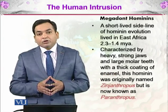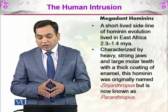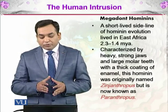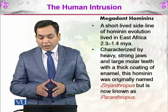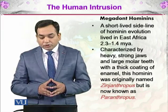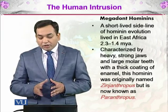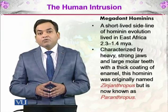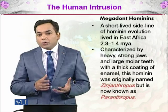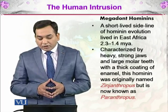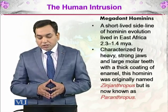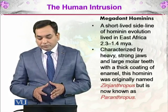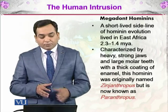The Megadont hominins were a short-lived sideline in hominin evolution that lived in East Africa from 2.3 to 1.4 million years ago. They are characterized by heavy, strong jaws and large molar teeth with a thick coating of enamel — which gives them the name Megadont, meaning 'big teeth.' This hominin was originally named Zinjanthropus, but is now known as Paranthropus.